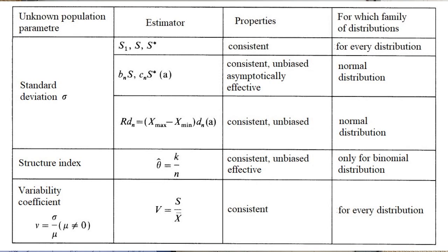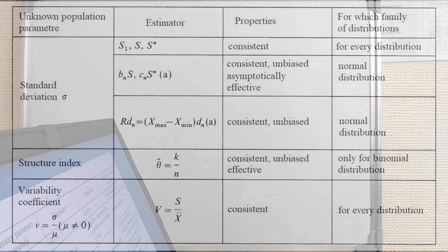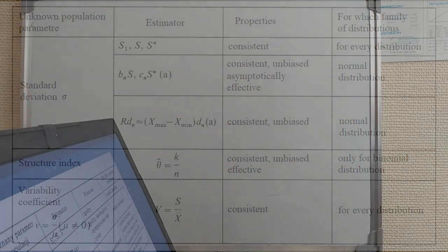Now, the coefficient of variability, which is sigma divided by mu, for mu different from zero, and we take just s over the mean of the sample. And this is consistent and refers to any possible distribution.